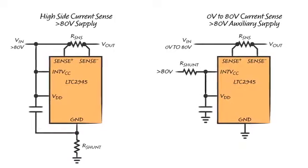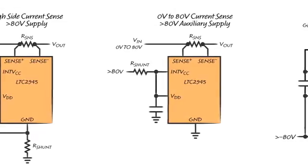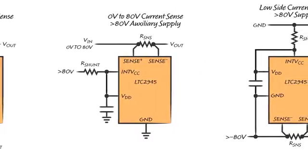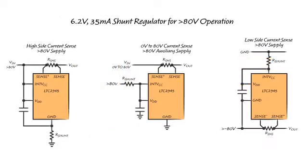INTVCC can also function as a 6.2 volt shunt regulator. This allows the part to be powered from any voltage through a resistor or transistor current source. Just make sure between 5 and 15 milliamps are always flowing and that the resistor's voltage and power ratings are not exceeded.